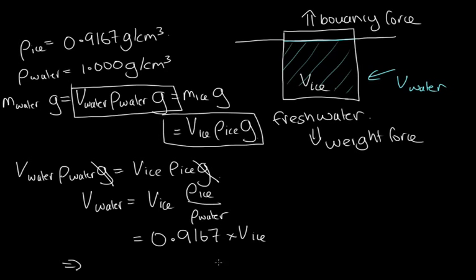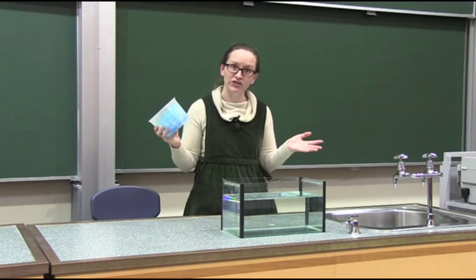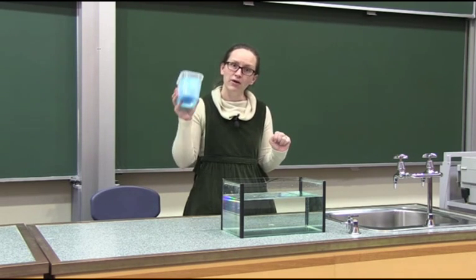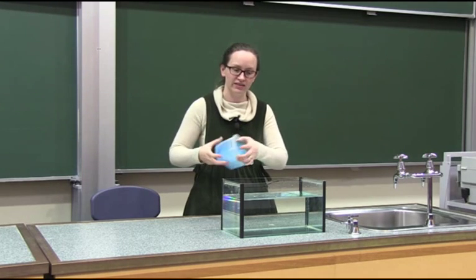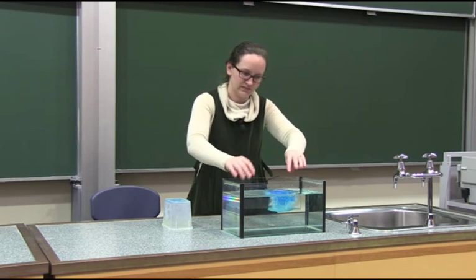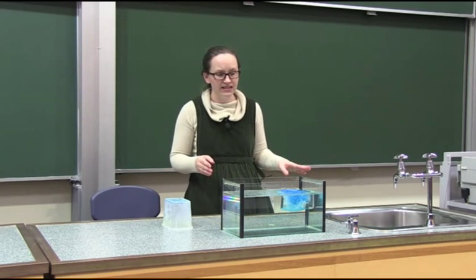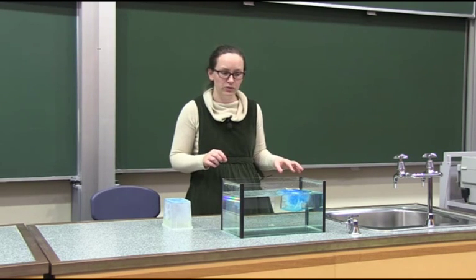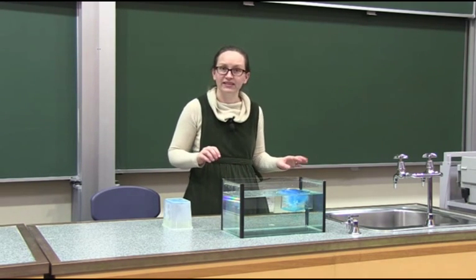Multiplying by 100 to get a percentage, 0.9167 times 100 tells us that approximately 92% of the iceberg is underwater. With salt water, it'll be a slightly lower percentage underwater because salt water is more dense than fresh water. Looking at the ice block in the fish tank, as expected, the majority of the ice block is underwater with just a small fraction on top.